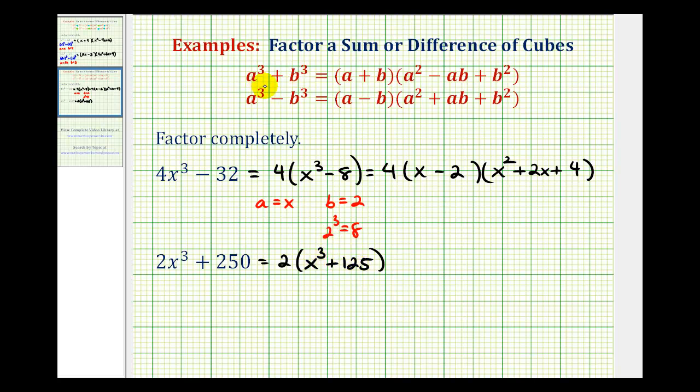So now we should recognize that a would be equal to x and b would be equal to five since five cubed is equal to 125. So now we can factor this further. We'll have two times a binomial times a trinomial. So our binomial is going to be a plus b, or in this case x plus five.